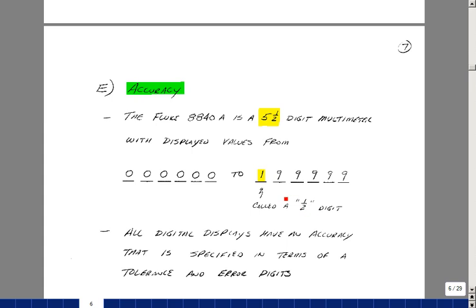So five of the digits can go from zero to nine and then this leading one is either a zero or a one. We call it a half digit in the sense of a binary case of just two values.